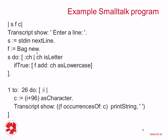In the next statement, we have f := Bag new. This should look familiar — we are sending the new message to Bag, and Bag is a class because it starts with a capital letter. We are basically creating an instance of the Bag class by sending the new message to Bag. Notice that new is a class method. We get back an instance of Bag, and f is then a reference to that instance.